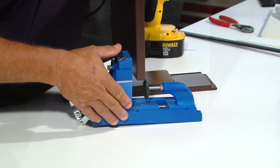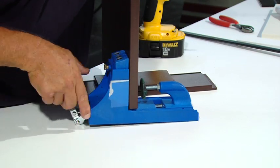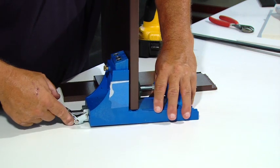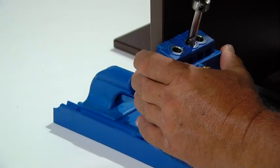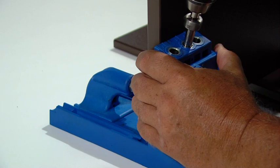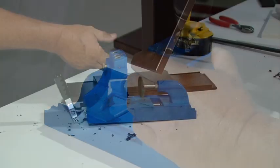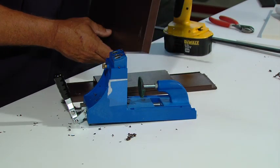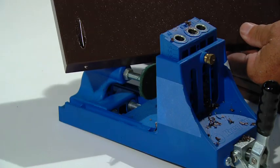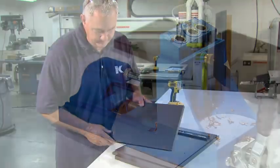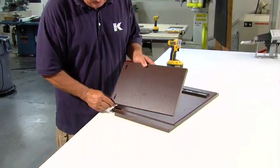Using a pocket hole jig is the best and fastest way to create strong plastic joints with concealed fasteners. Pocket joints are similar to dowel joints except that a screw is used and only one joint element needs to be drilled. The holes are drilled at a shallow angle on the back of the piece. These shallow holes conceal the fastener and create a very strong joint.